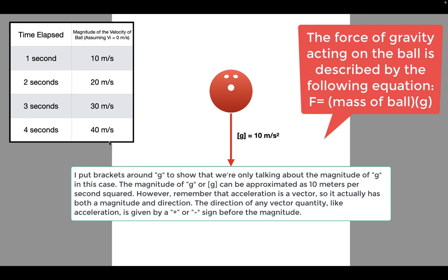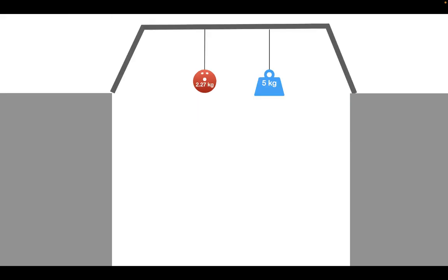This is what freefall is. Freefall is a term that describes an object moving only under the influence of the force of gravity. Now, what if we take the same scenario but compare how two different objects fall? The first object is our bowling ball with a mass of around 2.27 kilograms. The second object is a weight of around 5 kilograms — roughly double the mass of the bowling ball. Assuming there is no air resistance, which object would reach the ground first?